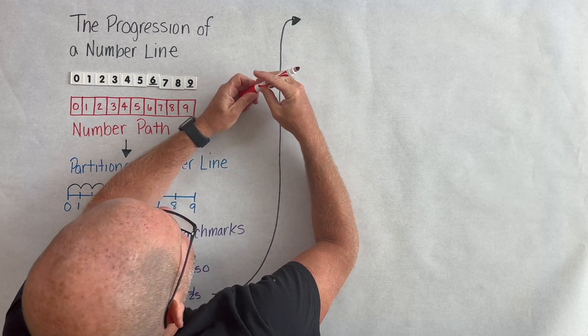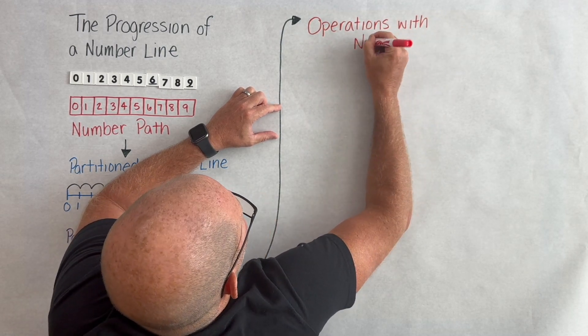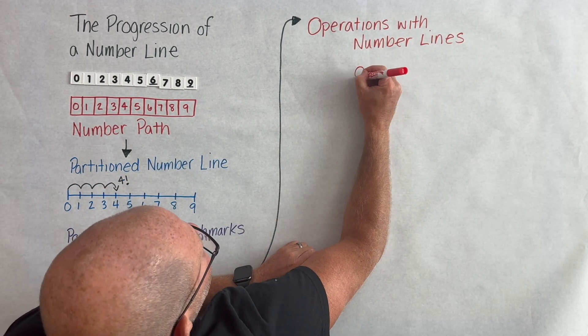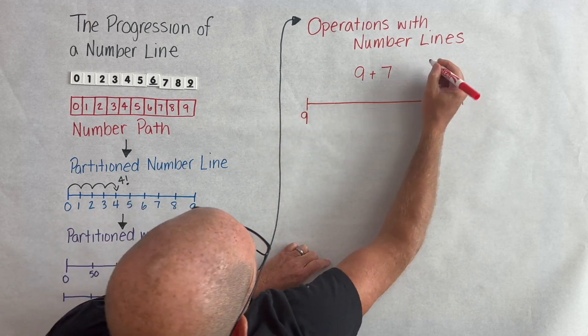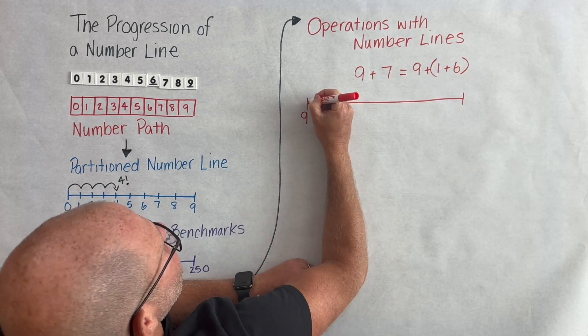So this is a number line and how can we use this and scale this into operations with number lines? Well, in first grade when students are beginning to unpack that idea of the associative property and making a 10, they might use a number line to model 9 plus 7.